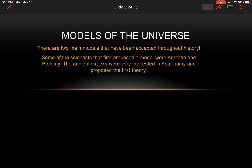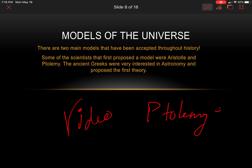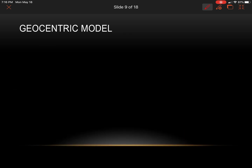Models of the universe: there are two main models that have been accepted throughout history. Some of the scientists who first proposed a model were Aristotle and Ptolemy. The ancient Greeks were very interested in astronomy and proposed the first theory. At this point, watch the first video on Ptolemy and Aristotle, and write down two interesting things you observe.